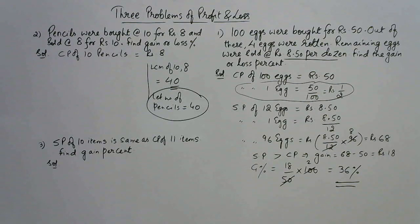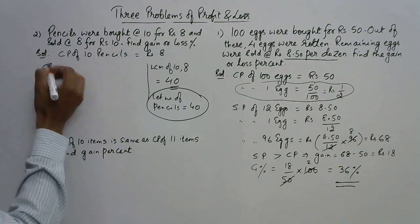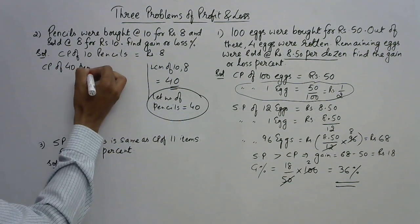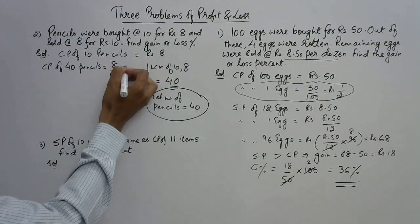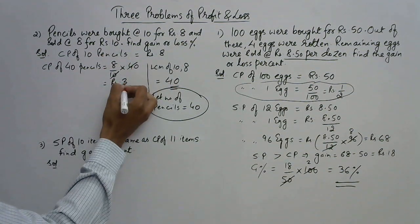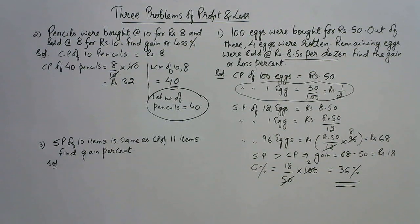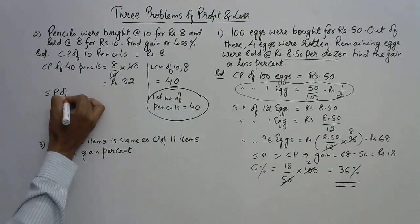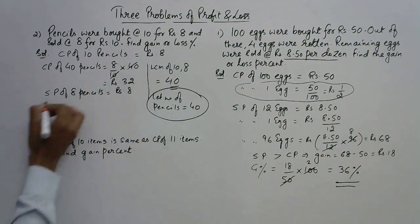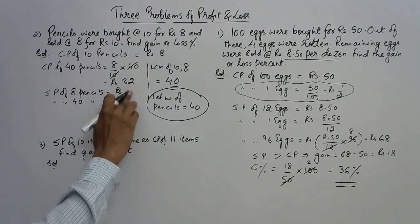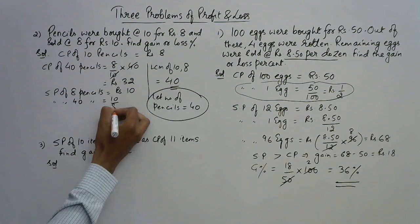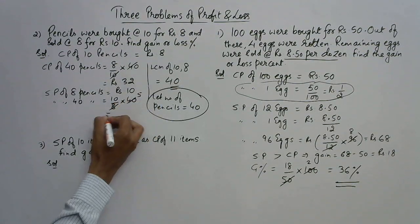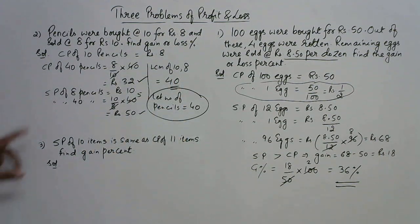Cost price of 40 pencils: for one pencil it is 8 upon 10, so for 40 pencils it is 8 upon 10 multiplied by 40, which is rupees 32. Now for the selling price of 40 pencils using the second condition: SP is rupees 10 for 8 pencils, so SP of 40 pencils is 10 upon 8 multiplied by 40, which goes exactly 5 times, giving rupees 50.